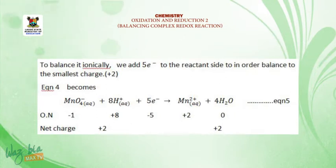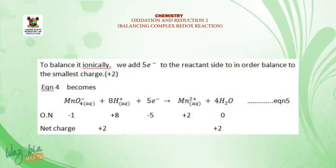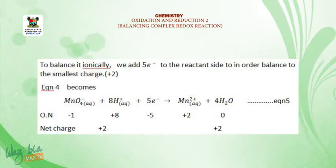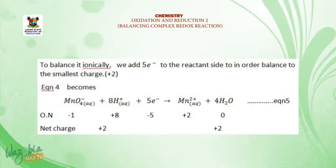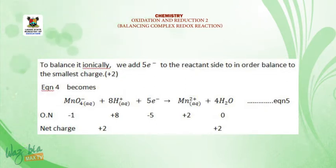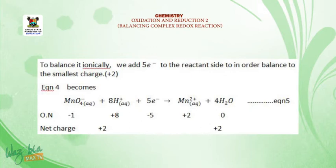Equation 4 then becomes MnO₄⁻ + 8H⁺ + 5e⁻ → Mn²⁺ + 4H₂O. Checking: on the reactant side −1 + 8 − 5 = +2, and on the product side Mn²⁺ is +2 and 4H₂O is 0, giving +2. So both reactions are now balanced atomically and ionically.